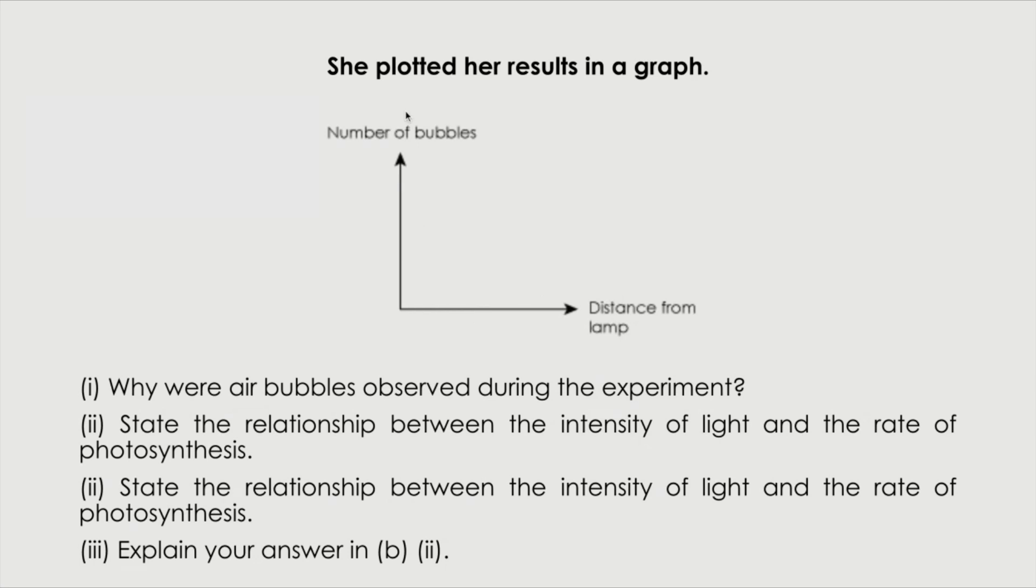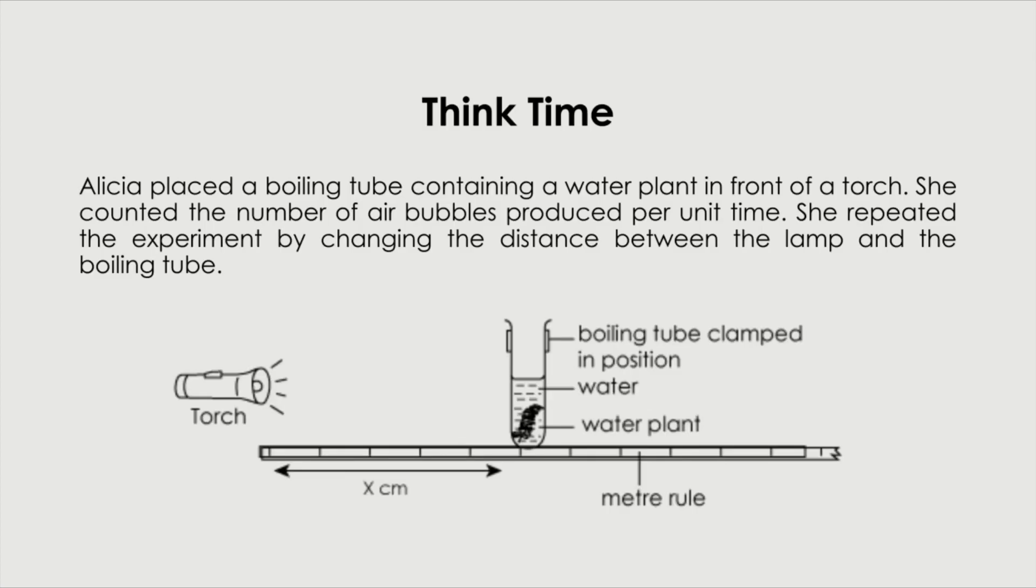She plotted her results in a graph. Distance from lamp and number of bubbles. Why were air bubbles observed during the experiment? First of all, let's go back to the diagram. When you have source of light and you have water and you have a water plant, what is the process that's occurring here? You're right. It's photosynthesis. And what is the byproduct of photosynthesis? Oxygen, right? And oxygen is a gas. When you have gas in water, you will see air bubbles. That's actually oxygen that's being released in the form of air bubbles.